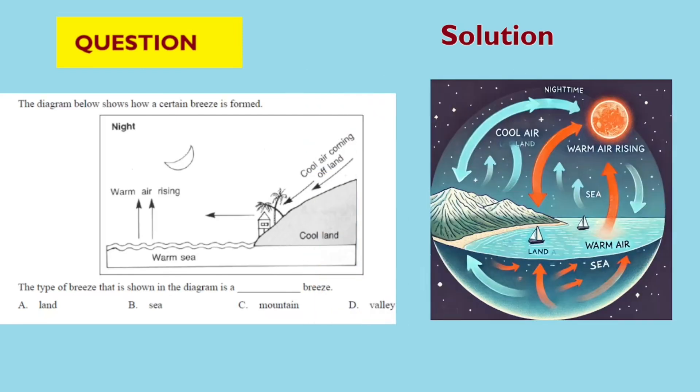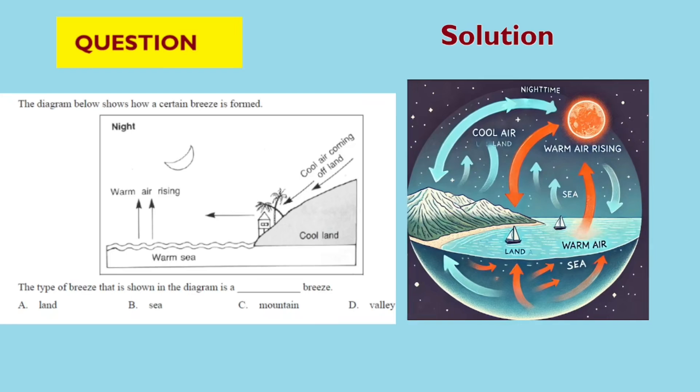Third, analyze air movement. Cool air from the land moves toward the sea, and warm air over the sea rises. This movement suggests that air is flowing from the land to the sea.